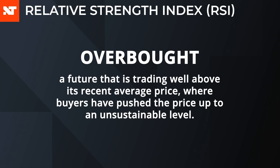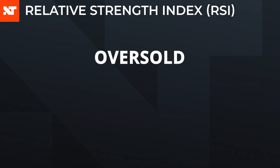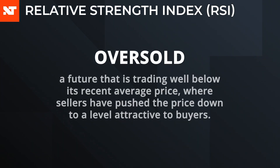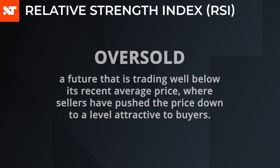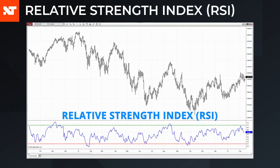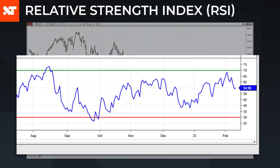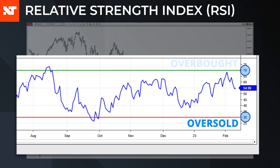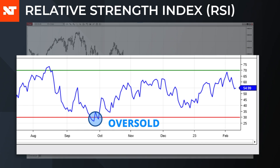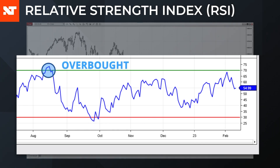Overbought refers to a futures contract that is trading well above its recent average price, where buyers have pushed the price up to an unsustainable level. Oversold is the opposite — it refers to a futures contract trading well below its recent average price, where sellers have pushed the price down to a level attractive to buyers. The RSI is a bounded study ranging from 0 to 100, with thresholds of 30 and 70 used as the traditional oversold and overbought levels. When the RSI falls below 30, the underlying is said to be oversold; above 70, overbought.